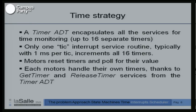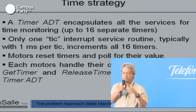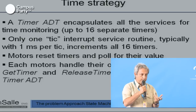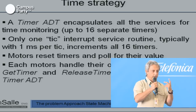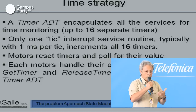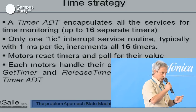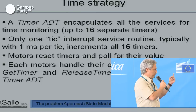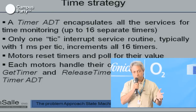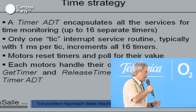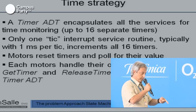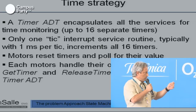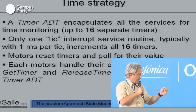Only one tick interrupt in the whole system — only one tick interrupt service routine. Our concern about interrupts is because interrupts are very dangerous pieces of code; they enter whenever they want, making them difficult to program. So we reduce and control the interrupt service routines. Only one tick interrupt service routine enters typically every one millisecond — we call that a tick. Motors reset the timer and continuously poll, waiting for the passage of time.